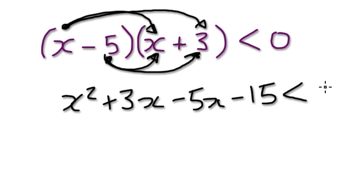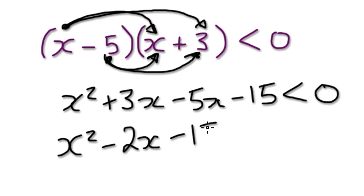Minus 15, strictly less than zero. Now, let's merge this and this together. So that would be, this would be x squared minus 2x minus 15, strictly less than zero.